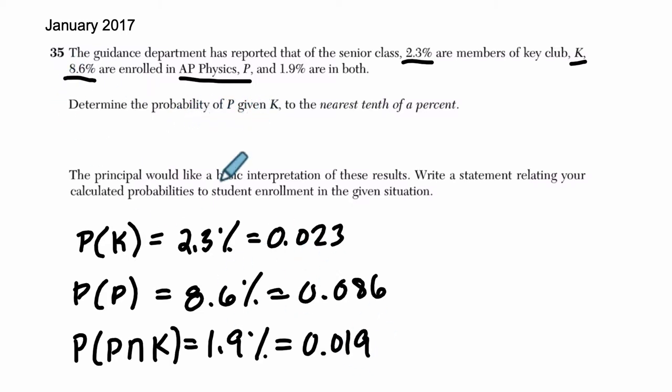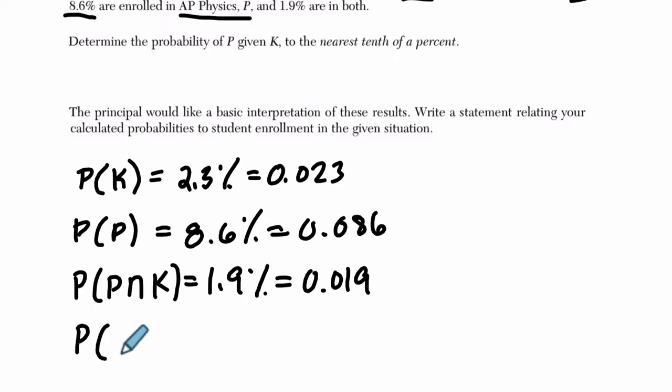Determine the probability of P given K. So they want to know what is the probability of P given K. Well, we know that they're in the key club. It's given. That's the letter after this vertical line is the given. If they are in key club, how likely is it that they are also a member of the AP Physics group? So the principal would like a basic interpretation of these results. So they want to know what does this equal, and they also want to know what does it mean.